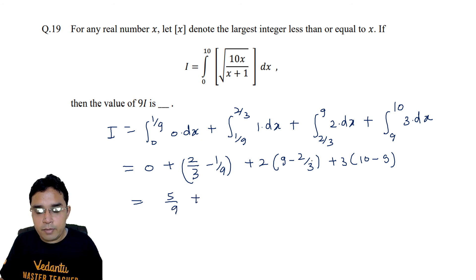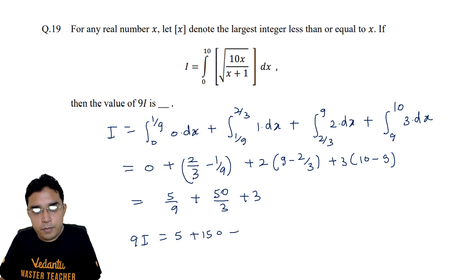And we are looking for 9I, so the value of 9I will be 5 plus 150 plus 27. So if we calculate it, we get 182.